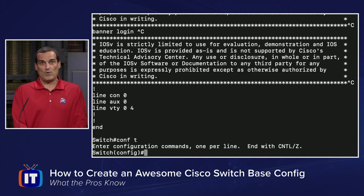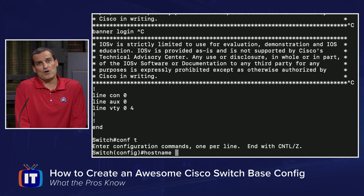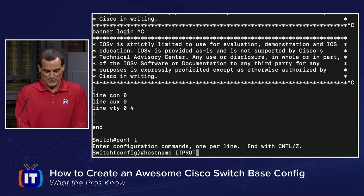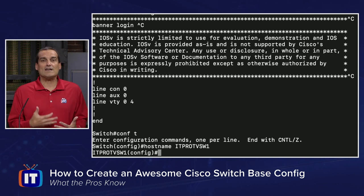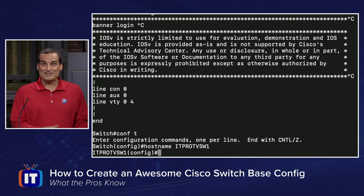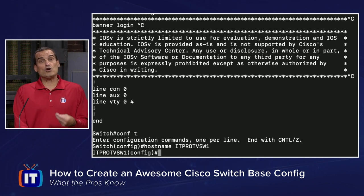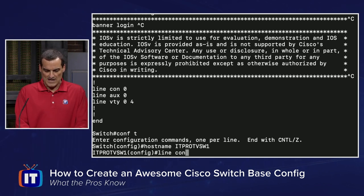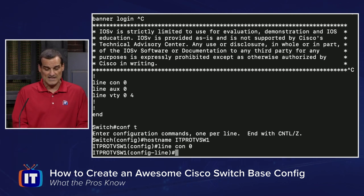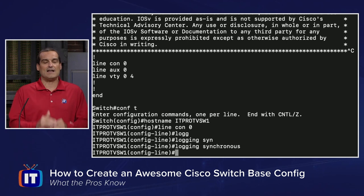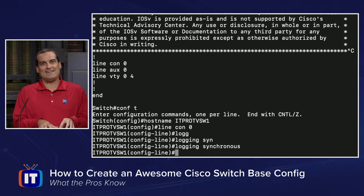One of the first things we need to do is get into global configuration mode and give this switch a proper name, because a switch doesn't want a name of just 'switch' — that's boring and doesn't identify the device uniquely on a topology map. We'll give this a name of ITProTVSW1. You'll want a naming convention for your base configurations as well as production. The first thing I like to configure is the console, because it impacts how we work with the device. We want to enable synchronous logging so that the CLI is not interrupting our typing and carrying it down to the next row.